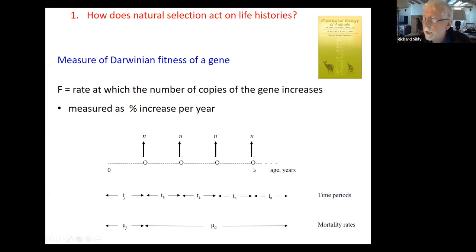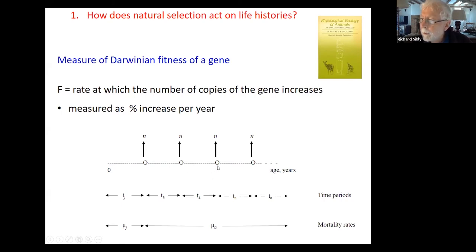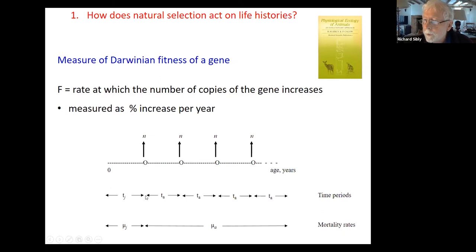If we think of the timescale during the life history, we're born here, and then at this point we first reproduce. We produce n offspring. In a simplified model, we can produce n offspring periodically throughout life, potentially forever. This life history has a time interval TJ for the development period of the juvenile, and TA for the adult — the period between reproductive events.